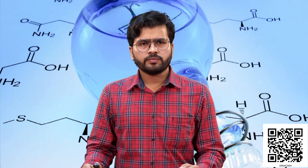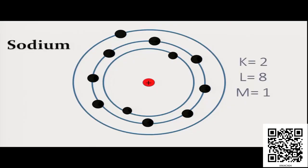So let's take one example. If you look at sodium — 11 electrons distributed as: K shell 2 electrons, L shell 8 electrons and M shell only 1 electron. Here in this case of sodium, if you observe carefully, if we can remove one electron from the outermost shell of sodium, that is from M, it can achieve the electronic configuration of 2-8, that is the configuration of neon.